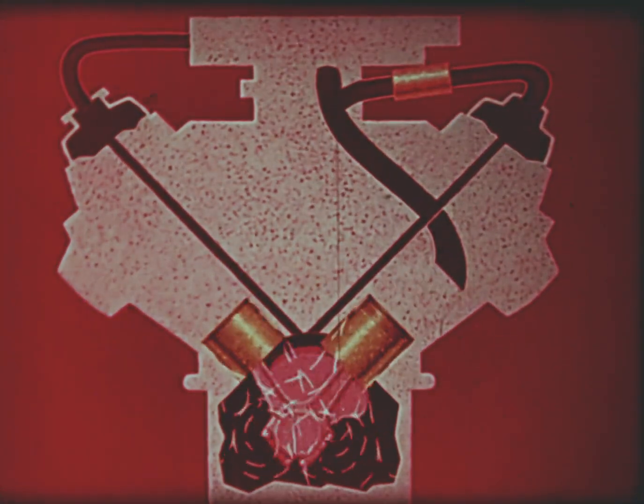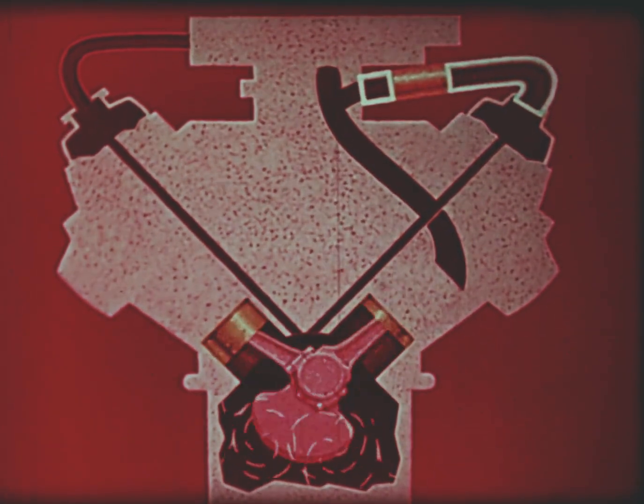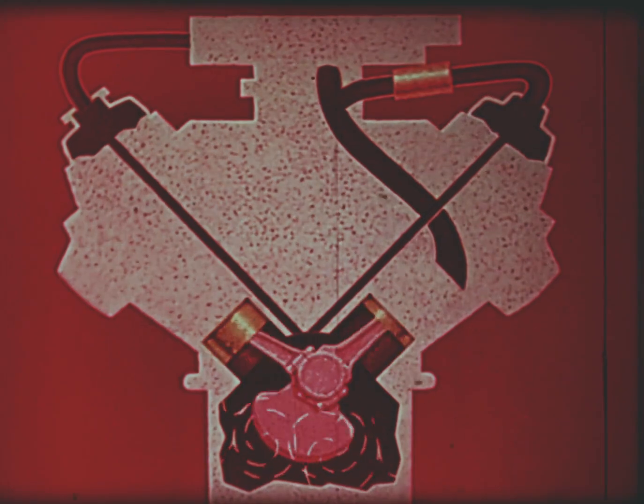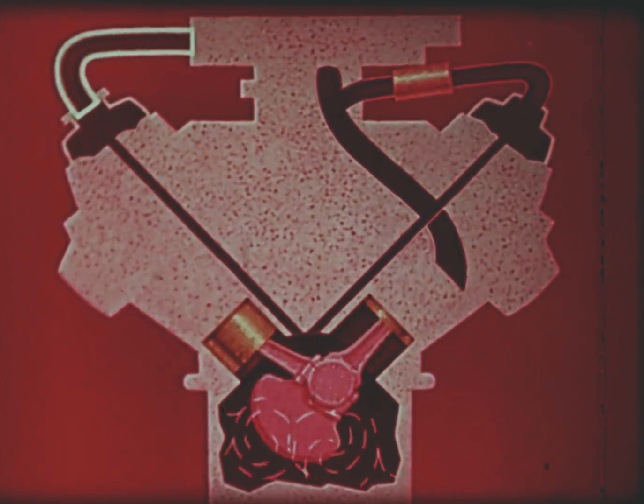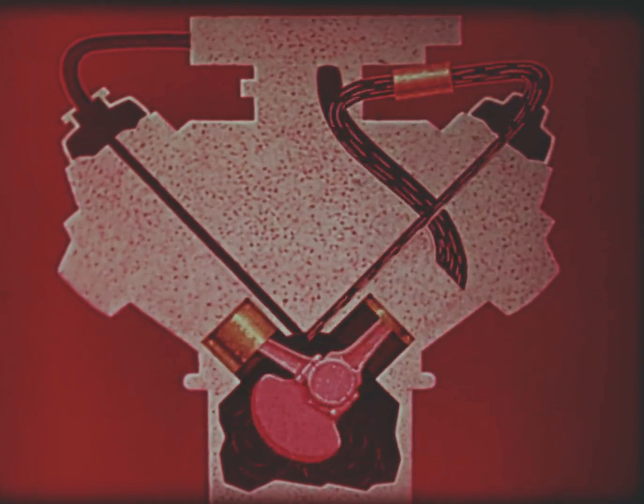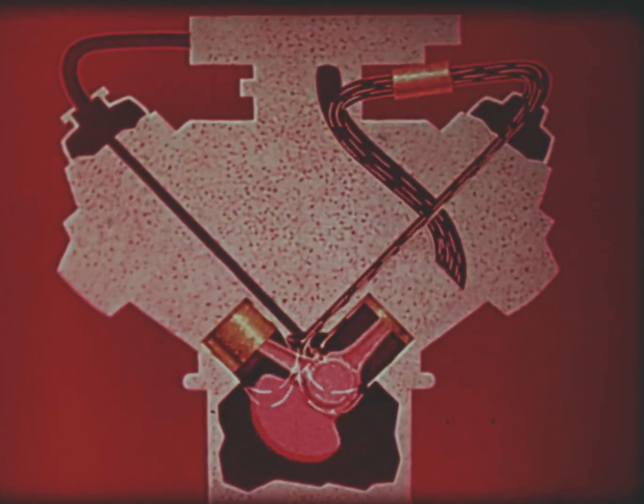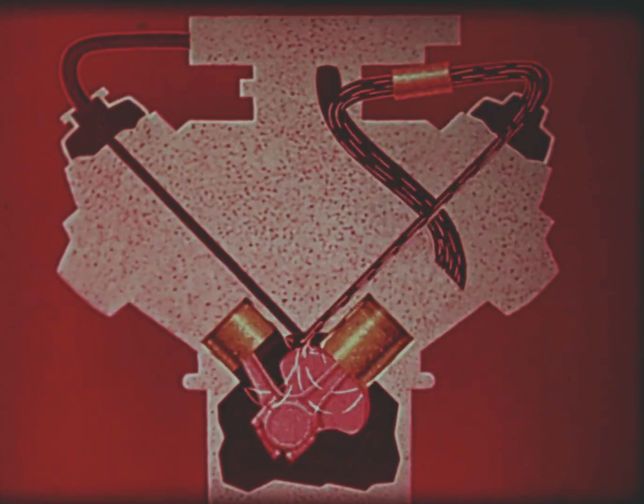In a PCV system, a hose with a one-way control valve in it connects one of the valve covers to the intake manifold, and another hose connects the air cleaner to the other valve cover. The crankcase gases are drawn up and into the cylinders where they are burned. Clean air replaces the removed gases.